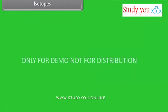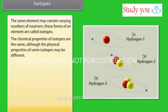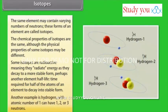Isotopes. The same element may contain varying numbers of neutrons. These forms of an element are called isotopes. The chemical properties of isotopes are the same, although the physical properties of some isotopes may be different. Some isotopes are radioactive, meaning they radiate energy as they decay to a more stable form, perhaps another element. Half-life is the time required for half of the atoms of an element to decay into stable form. Another example is hydrogen with atomic number of 1 can have 1, 2 or 3 neutrons.